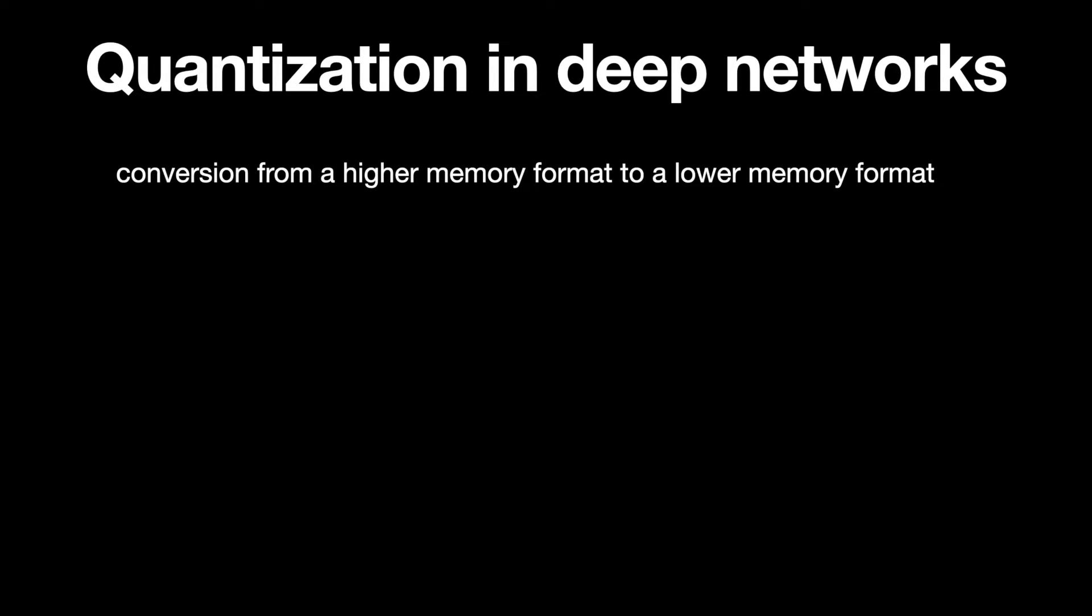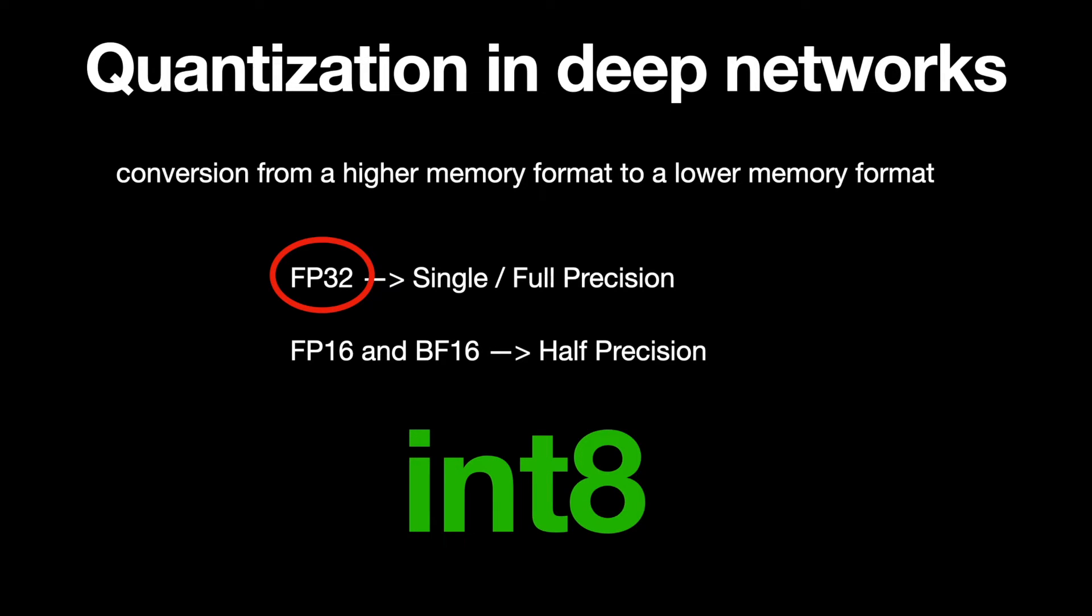Talking in deep learning terms, float32 is referred to as single or full precision, and float16 and bf16 are called half precision. The default way in which deep learning models are trained and stored is in full precision. The most commonly used conversion is from this full precision to an int8 format.